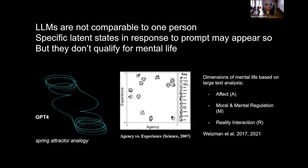I also want to say that LLMs are not comparable to one person. They might have specific latent states that come up in response to particular prompts that might appear like they have a mind, but they don't qualify for mental life on the dimensions of experience, agency, affect, moral and mental regulation, or reality interactions — all of which have been suggested in different papers as dimensions of mind perception. We cannot rank them highly. The best someone could say is that maybe there's some version of lateral temporal cortex, but not really the rest of the brain.